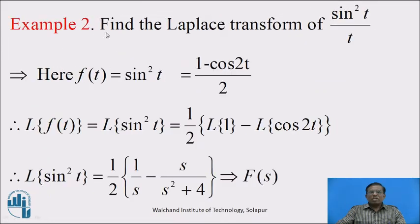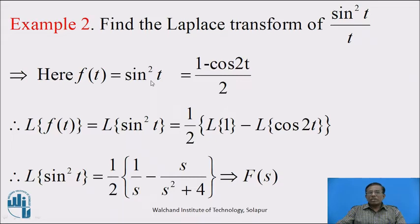Now let us consider another example: Find the Laplace Transform of sin²(t)/t. Here, the numerator function f(t) equals sin²(t). We have to find the Laplace Transform of sin²(t), but it is not in standard form, so we first simplify it as (1 - cos 2t)/2 using the trigonometric identity.